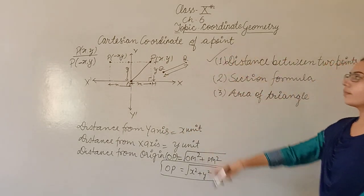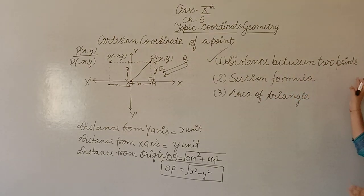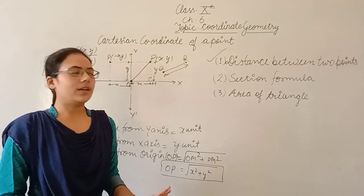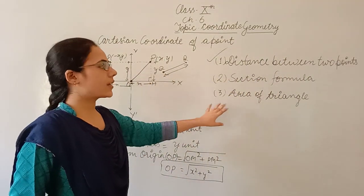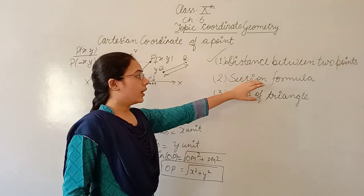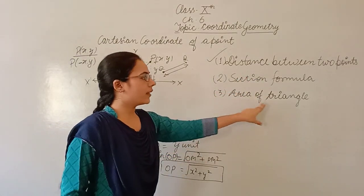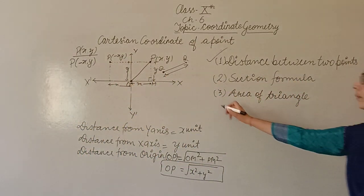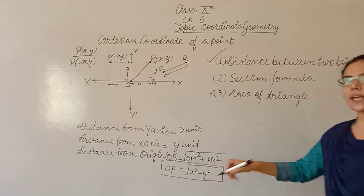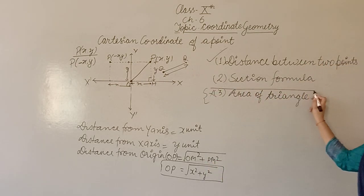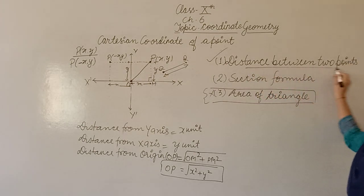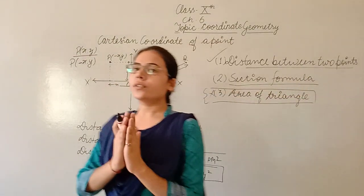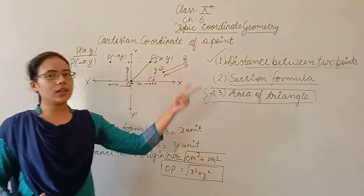This chapter covers three main topics: first, the distance between two points; second, the section formula; and third, the area of a triangle. In this video, we will cover the distance between two points and the section formula. Let's start by finding the distance formula.